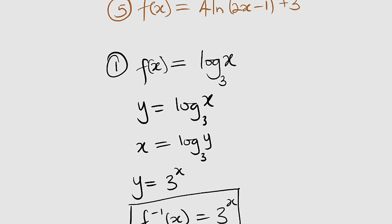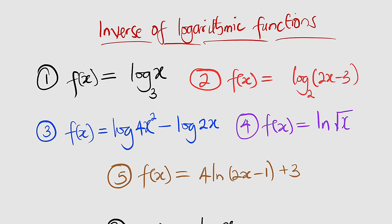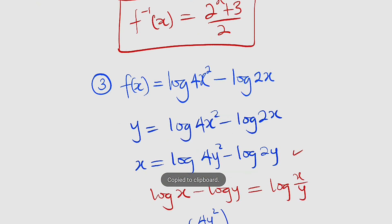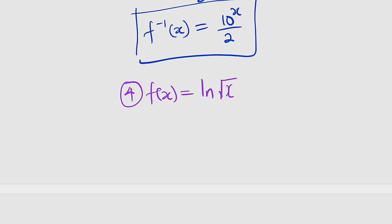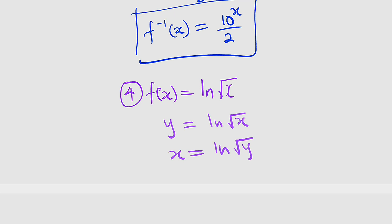Problem number 4: we have f of x equal to the natural log of the square root of x. First of all, let us replace f of x with y. So we have y equal to the natural log of the square root of x. Secondly, we are going to switch y and x. So we have x equal to the natural log of the square root of y. Remember that natural log is logarithm to the base e. So x is equal to log of the square root of y, base e.